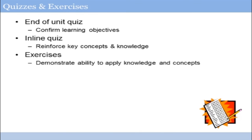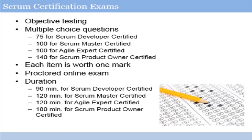One of the things that will help you understand your readiness for the certification exam is how comfortable you are answering the quiz questions and your underlying knowledge of the key concepts being tested. There are a number of different Scrum certification exams available. The Scrum certification exams are objective, multiple-choice tests. There are differing numbers of questions for the different tests — from 75 for the Scrum Developer Certified exam up through 140 questions for the Scrum Product Owner Certified exam. Each question is worth one mark, there's no guessing penalty, so take your best guess on every question. Your exam will be proctored online, with durations ranging from 90 minutes for Scrum Developer Certified, to 120 minutes for Scrum Master or Agile Expert, up through 180 minutes for Scrum Product Owner Certified.